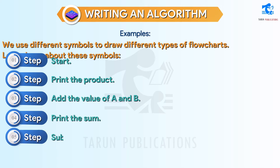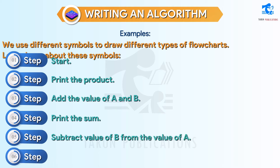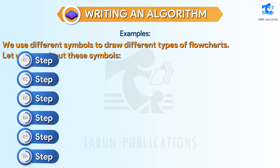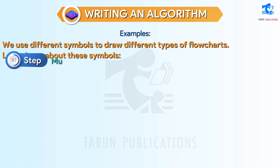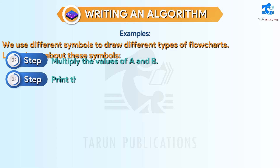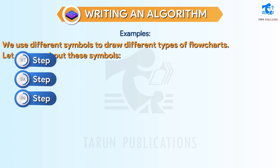Step 5: Subtract value of B from the value of A. Step 6: Print the difference. Step 7: Multiply the values of A and B. Step 8: Print the product. Step 9: Stop.